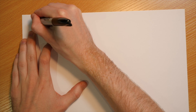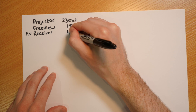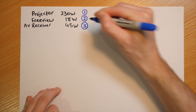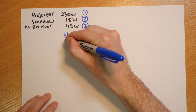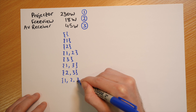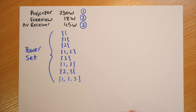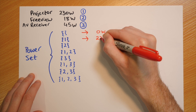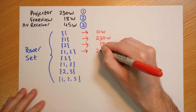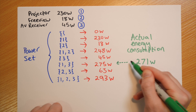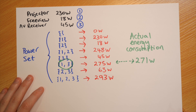We've got the energy consumption of the three devices. Any combination of them could be turned on at once. If we label them one, two, and three for the AV receiver, Freeview box, and projector, we could have anything from the empty set all the way up to all three. This resulting set is called the power set. We then loop through all combinations, sum up the energy for each, and see which one is closest to the current energy consumption coming from the plug — and use that to figure out which devices are on.